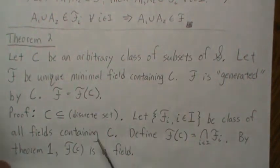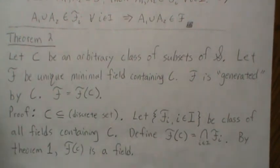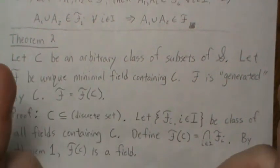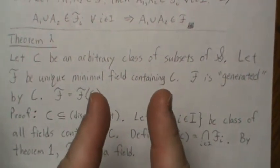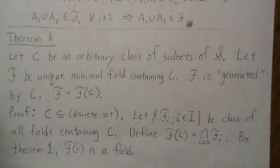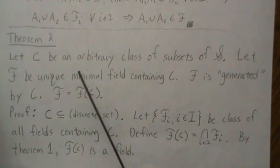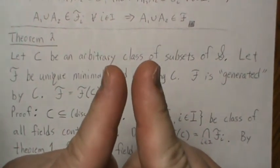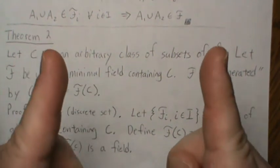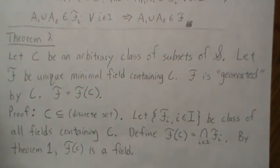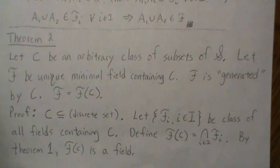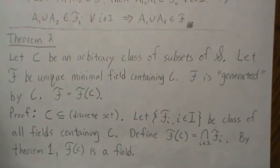The way we generated this minimum field is by taking all possible fields that contain C and then shrinking it down — creating it from upper bounds in a sense. There are also ways to take the initial set and incrementally expand it to get a field, but this theorem says: start big and shrink down to the minimum field. Anyway, that's all I have for fields. The next talk will be on sigma fields. Hope you enjoyed it — please like and subscribe so you don't miss the next one. Thanks, bye.